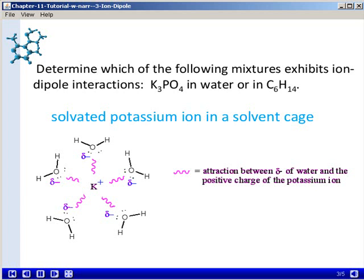And the water molecules, notice, have oriented themselves such that the negative oxygen of the molecules of water are pointed toward the positively charged potassium ion. And the squiggly line here corresponds to an electrostatic attraction between the partial negative part of the water, the oxygen, and the positive charge in the potassium ion.